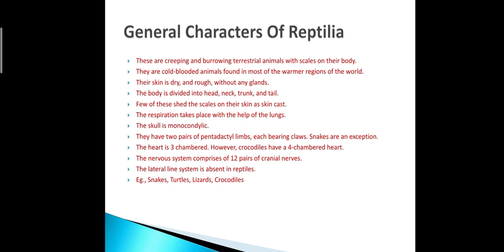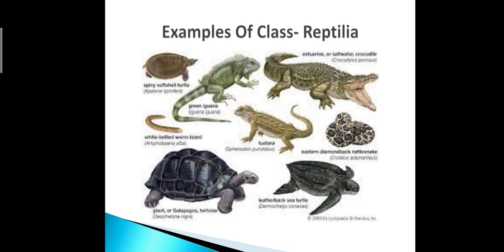Regarding the heart, reptilians have a three-chambered heart. Some reptilians show three and a half chambers, and crocodiles have a four-chambered heart. The lateral line system is absent in reptilian animals. Sexual dimorphism is well marked and they are oviparous as well as viviparous — for example, the Russell's viper is viviparous. Examples of reptilians include snakes, turtles, lizards, and crocodiles, as shown in the slides.